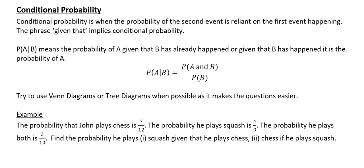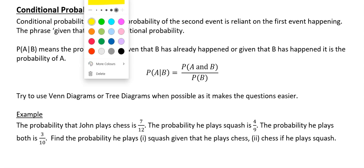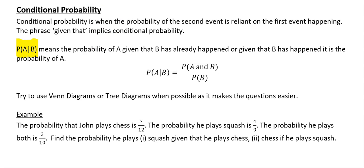So here we have the probability of A given B, which means the probability of A given that B has already happened. The formula is: probability of A given B is equal to the probability of A and B divided by the probability of B.